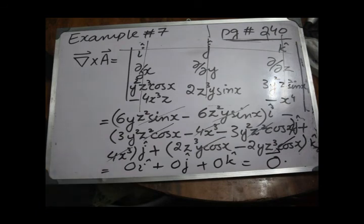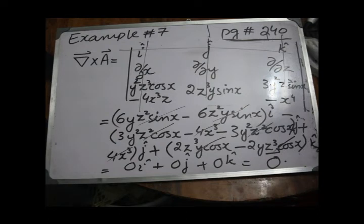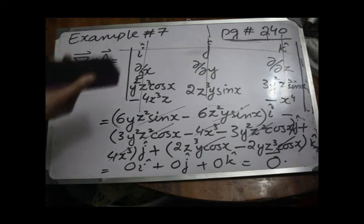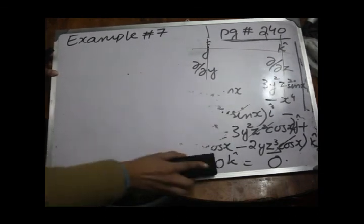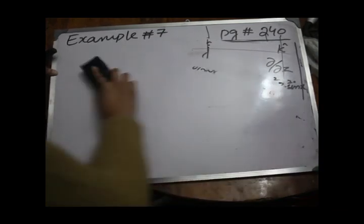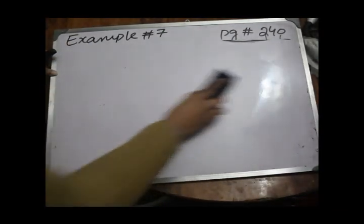Therefore it is proved that del cross a equals zero, which shows that the given expression a1 dx plus a2 dy plus a3 dz is an exact differential. Now the second part of the example asks: since this is an exact differential of some scalar function phi, find the value of phi.